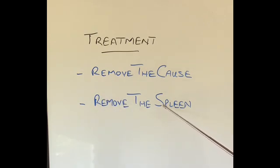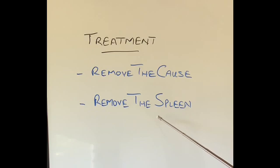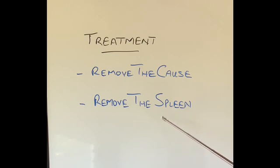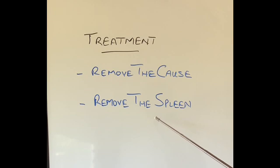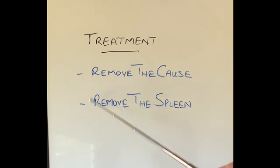There are two ways of removing the spleen if necessary. One way is to stop the spleen from functioning, which can be done with x-ray treatment or radiotherapy to the spleen. The other option is surgical removal of the spleen, called splenectomy, which I will discuss in my next video.